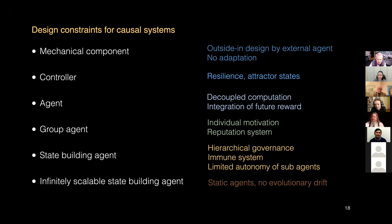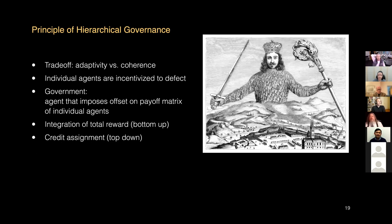We can see this in humans — we are basically a domesticated species of hominids. Homo sapiens is state-building because most individuals in our species are willing to submit to the group before doing their own thing. In an infinitely scalable state-building agent you can do somewhat less than in other groups, because you need to be static — you cannot have evolutionary drift, you cannot adapt beyond the mechanisms built into the system. If you drift, the infinite scale breaks and you are no longer consistent. So in hierarchical governance there is a trade-off between adaptivity and coherence. The more adaptive the system, the harder it is to maintain coherence.